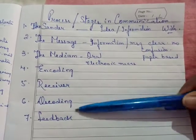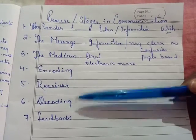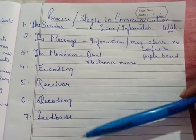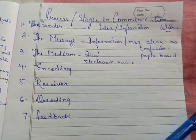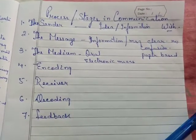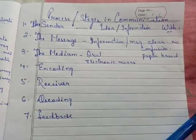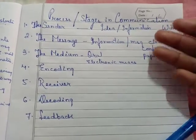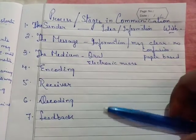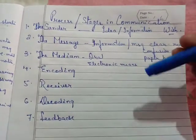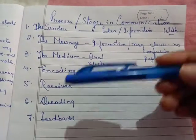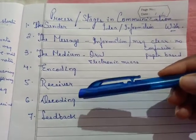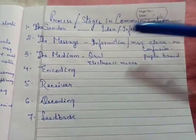Sixth is decoding. Decoding means when the receiver gets the message and attaches its own meaning so that they can understand the idea or information given by the sender — that is known as decoding. So the receiver decodes the message.